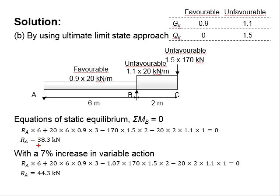Then, with a 7% increase of the variable actions, an additional 7% is provided at the variable actions. The reaction is found to be 44.3 kN. The increase is about 15%.